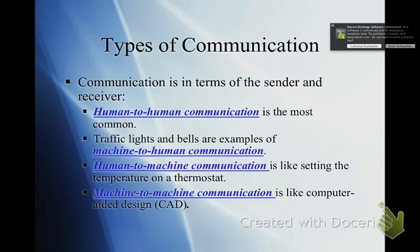When you go up to a traffic light and it tells you to stop, that's machine to person — the machine is telling you to stop or go. And machine to machine: if you are printing something from your computer and you hit print, your computer talks to your printer and it prints out. So the machine is talking to the machine.